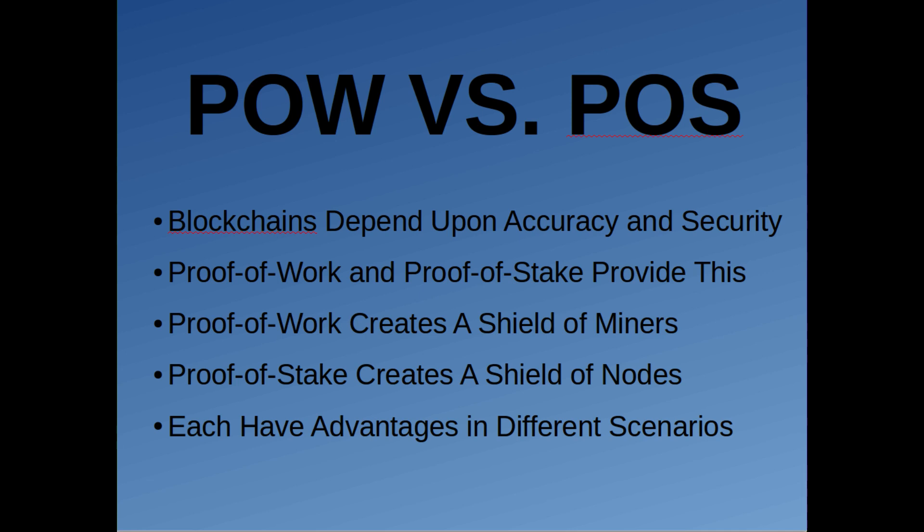A blockchain, if you understand it at all, is basically this long list that keeps track of itself. The reason why that's very useful is because there are a lot of different types of lists that people keep track of, and it costs a lot of money to make sure they're accurate. A blockchain is a list that can maintain its own accuracy, and that has a lot of business applications. Proof of work and proof of stake are the ways through which the blockchain keeps its accuracy and security.